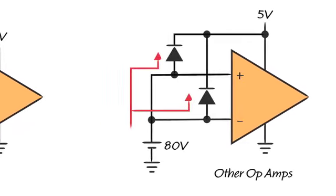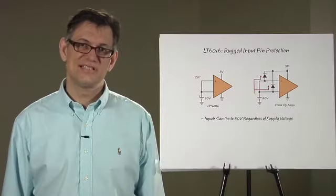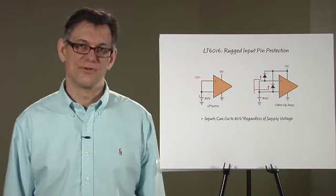Most other op amps have internal diodes from their inputs to the positive supply which turn on when you do this, drawing unlimited input current until either the input source is dragged down or the op amp blows up, whichever comes first. But the LT6016 is very tolerant of this condition, drawing at most microamps of current.